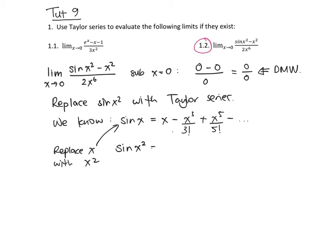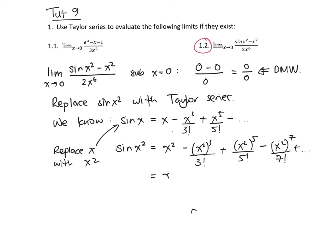So we get sine of x squared is equal to x squared minus x squared all cubed over 3 factorial plus x squared to the fifth over 5 factorial, and so on. Tidying this up, we've got x squared minus x to the sixth over 3 factorial plus x to the ten over 5 factorial minus x to the 14 over 7 factorial, and you can see the pattern that's building up.